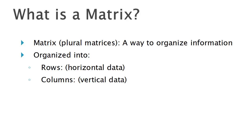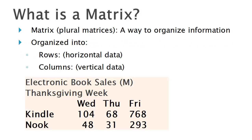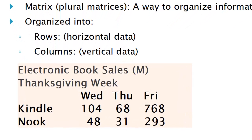The rows are horizontal data. For example, let's say we were trying to look at the sales of electronic books over last year's Thanksgiving week, and these sales were in millions of dollars. We looked at Kindle's data and Nook's data over the days Wednesday, Thursday, and Black Friday. Kindle on Wednesday had $104 million, then $68 million on Thursday, then $768 million on Friday.